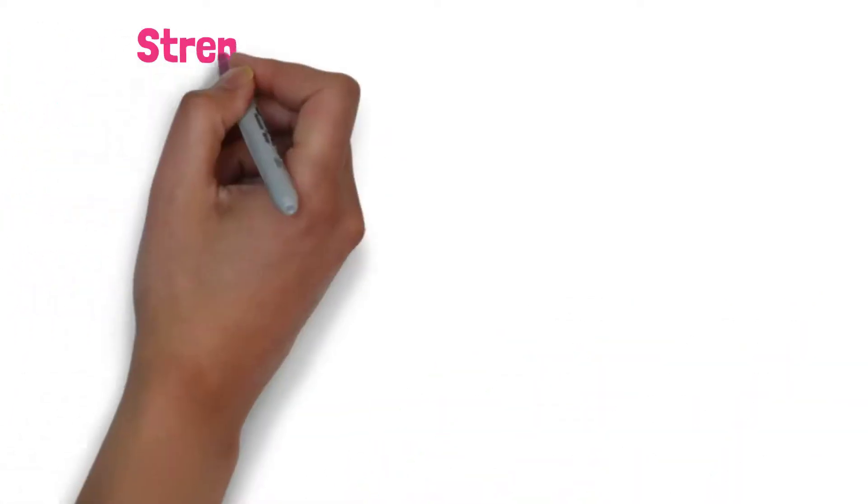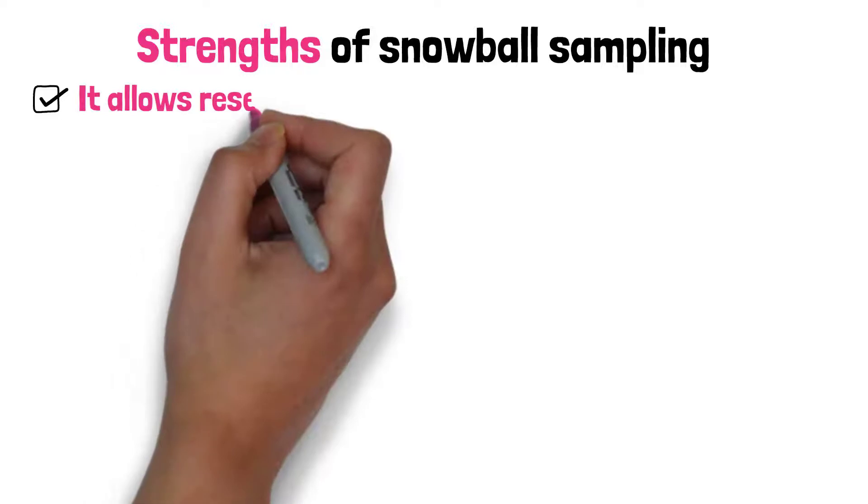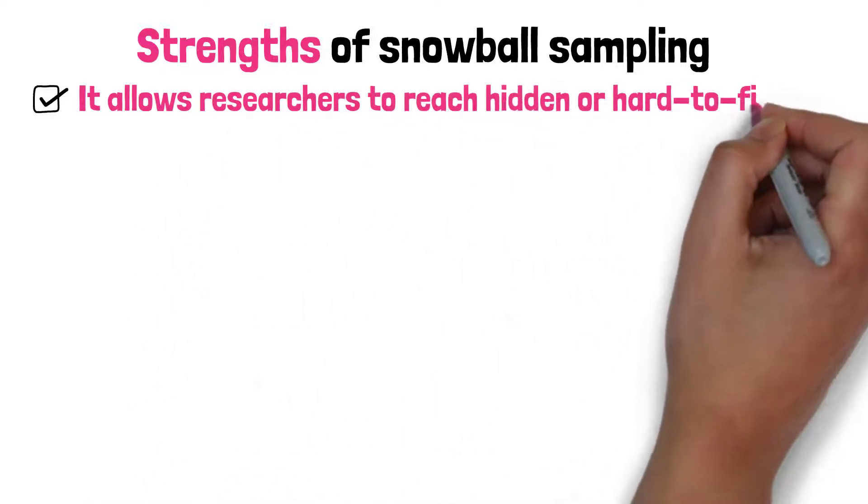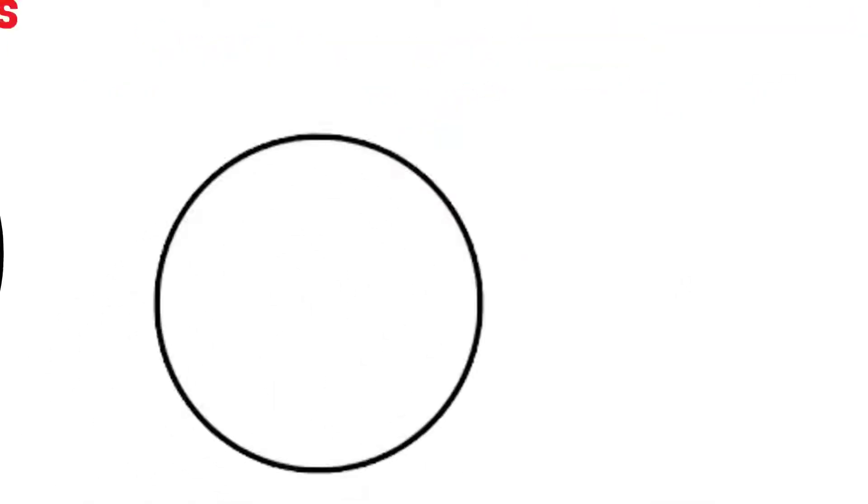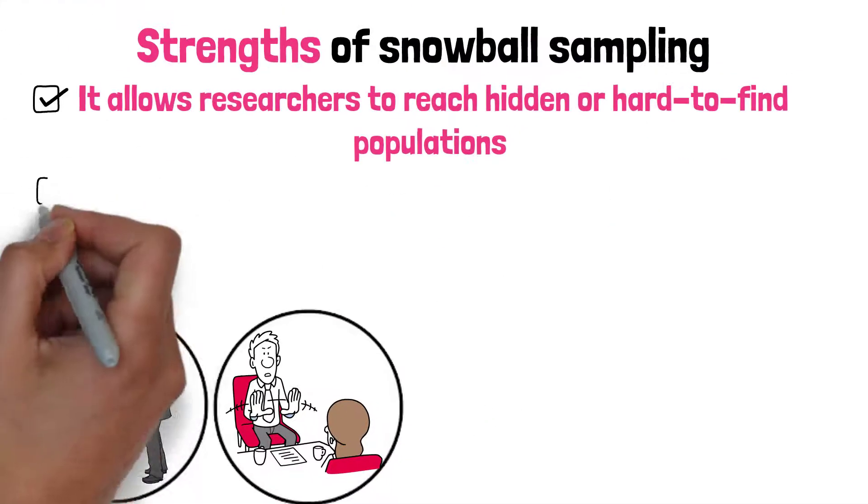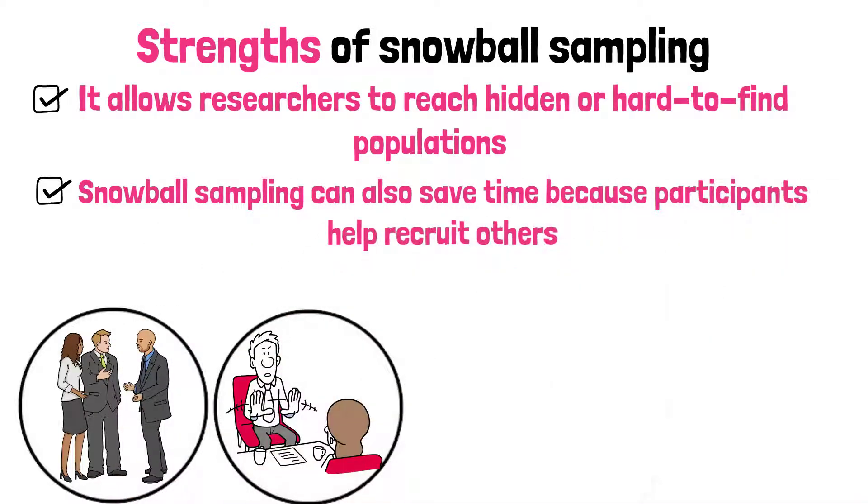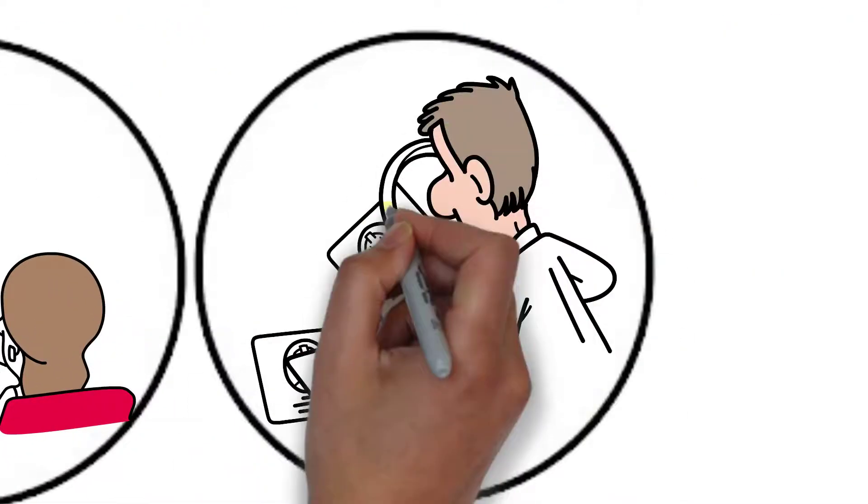Now let's look at some strengths of snowball sampling. One major advantage is that it allows researchers to reach hidden or hard-to-find populations, such as people who belong to niche groups or those who may not trust outsiders. Snowball sampling can also save time because participants help recruit others, speeding up the process of finding subjects.